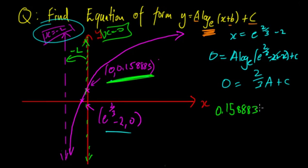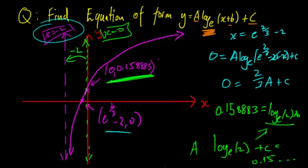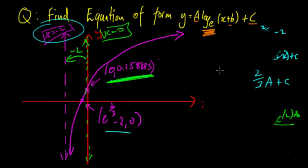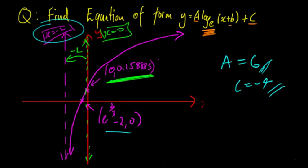For the second point, it involves decimal places so it'll be done on the calculator. When x = 0, we get y ≈ 0.5888... and the equation becomes 0.5888 = a·log_e(0 + 2) + c = a·log_e(2) + c. So we have the system: 0 = (2/3)a + c and 0.5888 = a·log_e(2) + c. Substituting into the calculator, you get that a = 6 and c = -4.